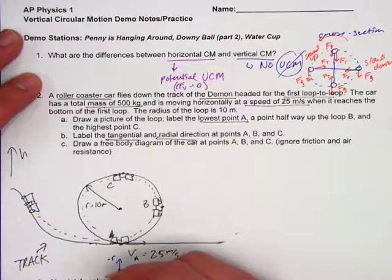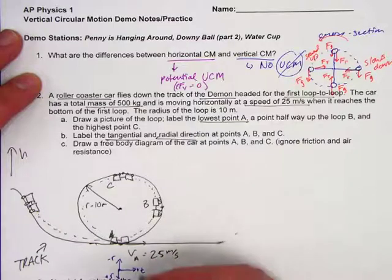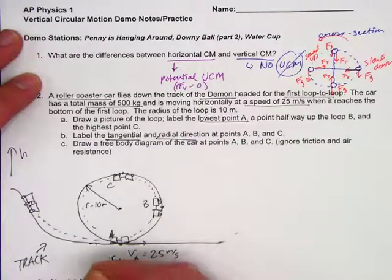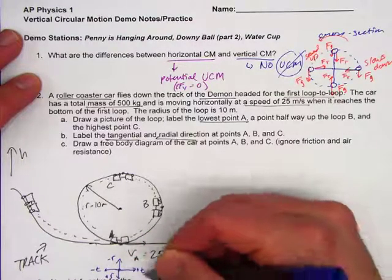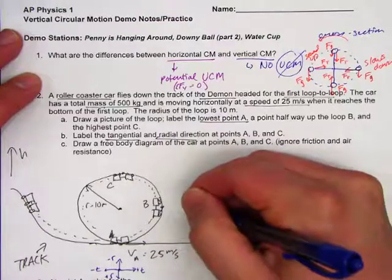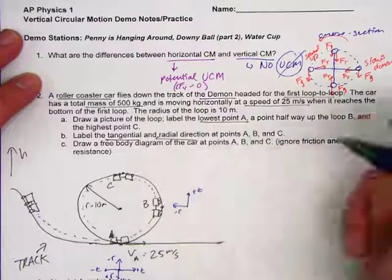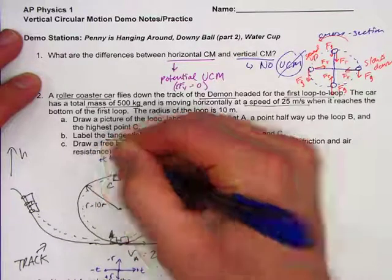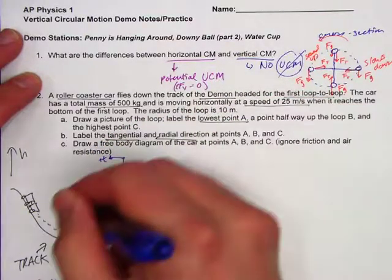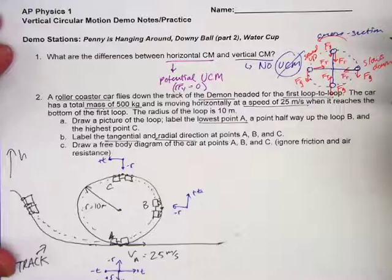We could flip it the other way, but for integration purposes later on, we want towards the center of the circle to be negative. So this would be the positive tangential, this would be the negative tangential, just like our X and Y. Then when we get to B, our negative radial is inward, our positive tangential is up. At C, negative radial inward, positive tangential in the direction that the car is moving. So as it moves around the circular path, we're always going to count radial towards the center or away from the center, tangential to the direction of the motion at any given point.